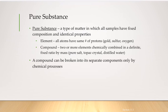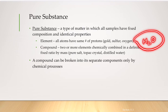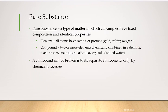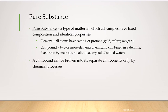A compound is formed when two or more elements combine with each other in a definite fixed ratio by mass. For example, water has the formula H₂O — for every oxygen there are two hydrogens. Sodium chloride (NaCl) has one chlorine atom for every sodium atom.